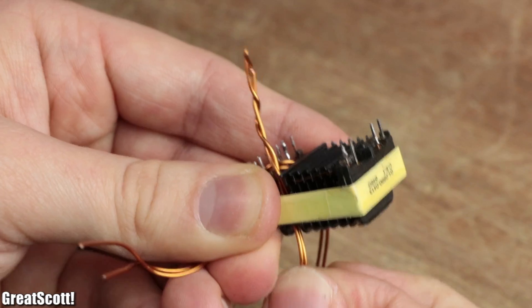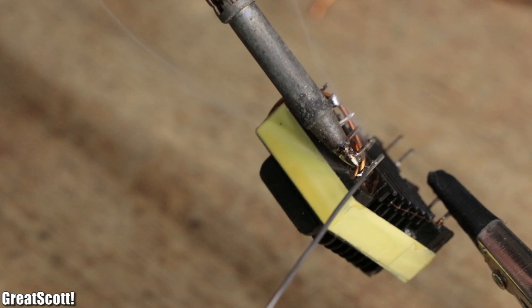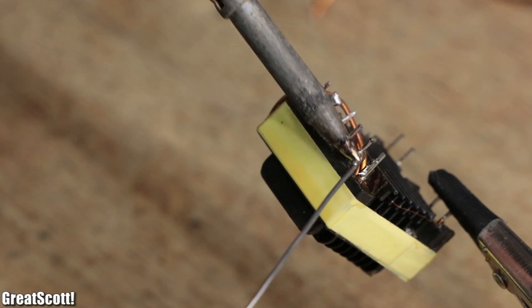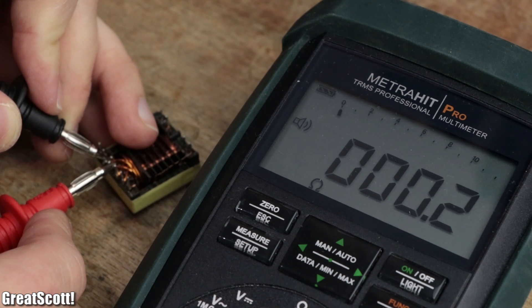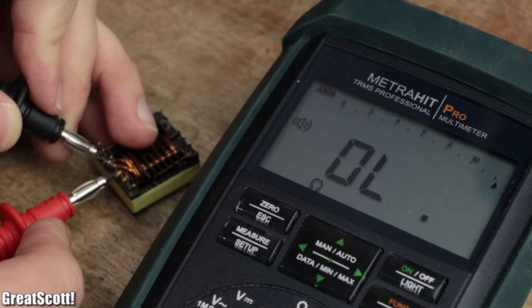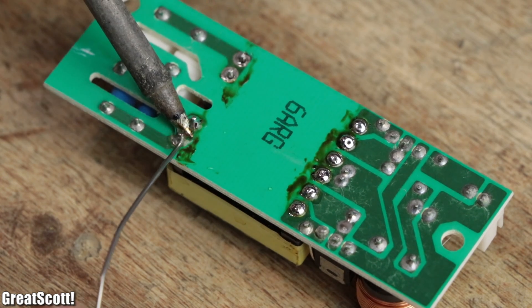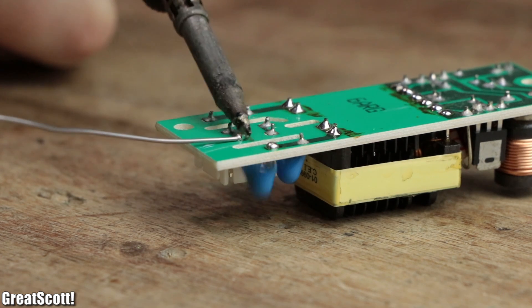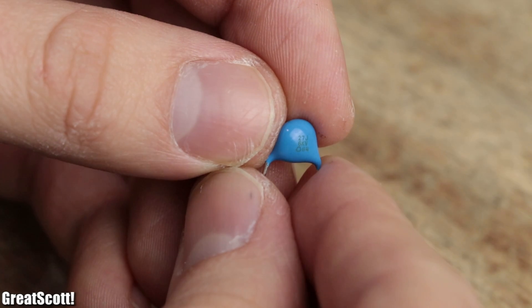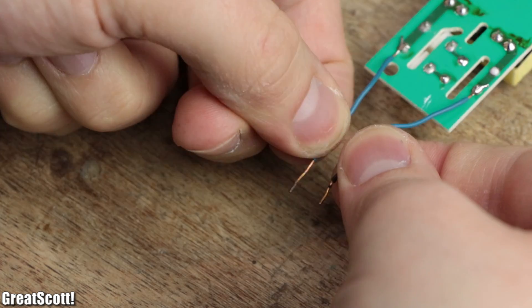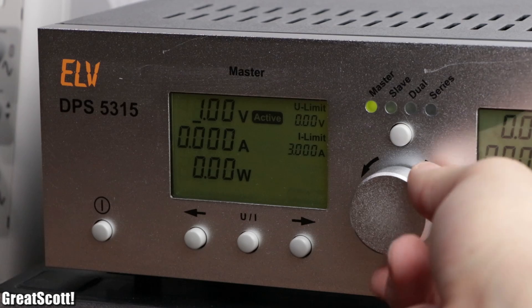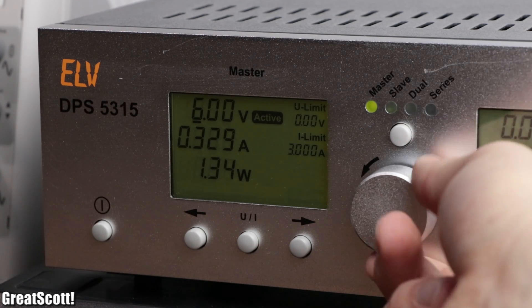So I went ahead and created a new center tap primary coil with the reduced amount of turns in order to replicate the voltage boost we experienced a second ago. Afterwards I double checked if the pin connections were the same as before, soldered in the transformer, removed the capacitors on the secondary coil since they are not suited for such a high voltage, added two output wires, and adjusted the distance to one another.